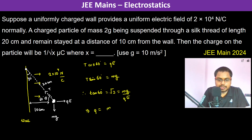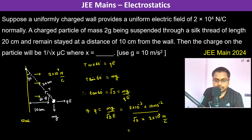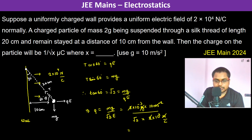Therefore, q = mg / (√3 · E). Substituting: mass = 2×10⁻³ kg, g = 10 m/s², E = 2×10⁴ N/C. Calculating: q = (2×10⁻³ × 10) / (√3 × 2×10⁴) = 1/√3 microcoulombs.